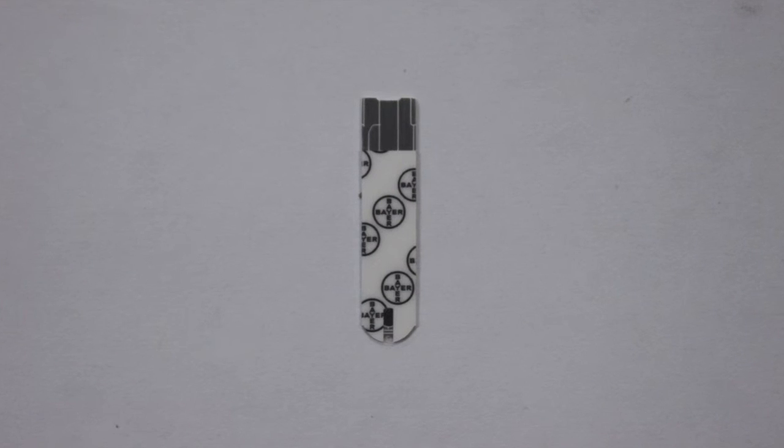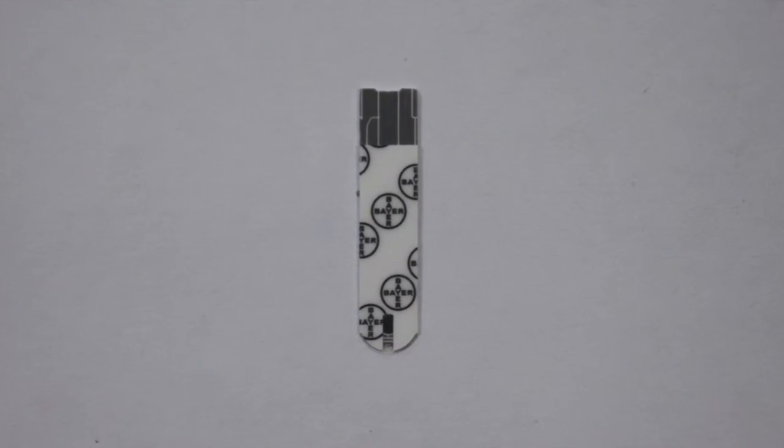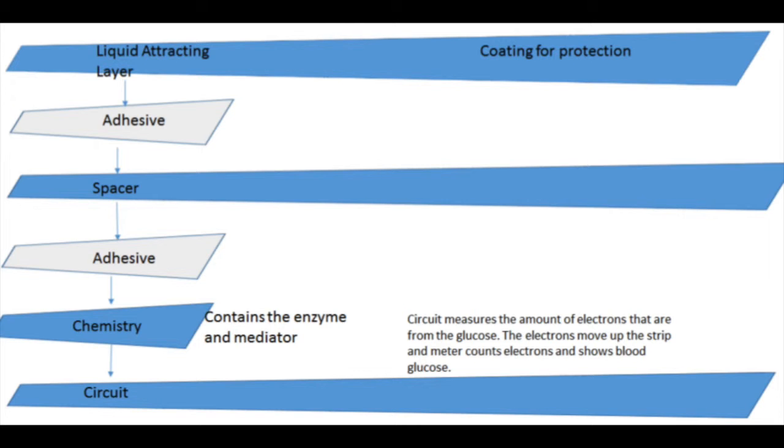This is what the test strip looks like. It is recommended to use the Bayer Contour Next brand specifically. The test strip includes six layers. The bottom layer is the circuit, which measures the amount of electrons from the glucose. The second layer is the chemistry layer, which contains the enzyme and the mediator. The third layer is adhesive. Then comes the spacer and another layer of adhesive. Next is the liquid-attracting layer, which attracts the blood from the user. Finally, there is a coating layer for protection from heat, water, or any other damage.